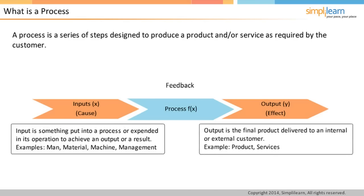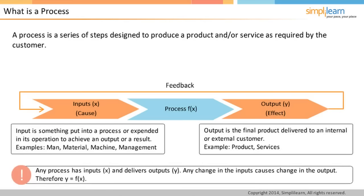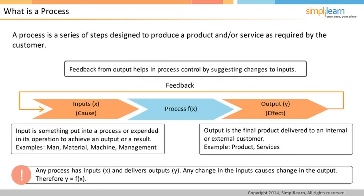Output is the final product delivered to an internal or external customer, for example a product or service. If the output of a process is an input for another process, the latter process is the internal customer. Each input can be classified as controllable (C), non-controllable (NC), noise (N), and critical (X). The most important aspect of the process is feedback. Any change in inputs causes a change in output; therefore, Y equals F of X. Feedback helps in process control because it suggests changes to the inputs.